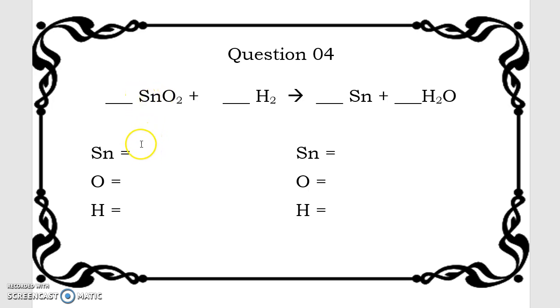First things first, Sn, this one right here, there's no subscript next to it, which means we have 1. Oxygen, we have 2 atoms because it's O2. Hydrogen, we have 2 atoms because it is H2.